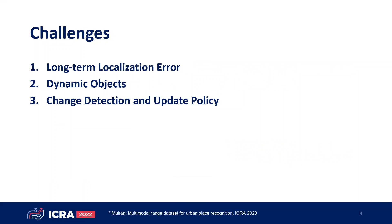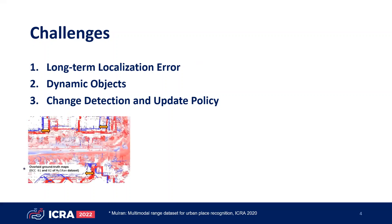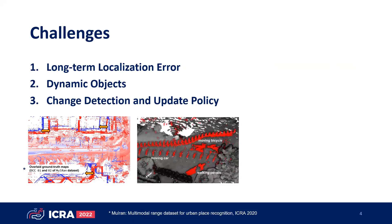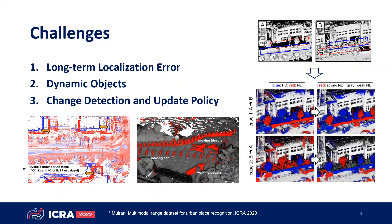To meet the aforementioned goals, three challenges should be handled separately and sequentially. We should first precisely align two sessions to detect changes accurately. For the alignment, we need to mitigate the long-term localization error or inter-session inconsistency. After accurate alignment of the central map and the query map, we first remove non-place points such as moving objects. And finally, we detect changes and define some update policies.